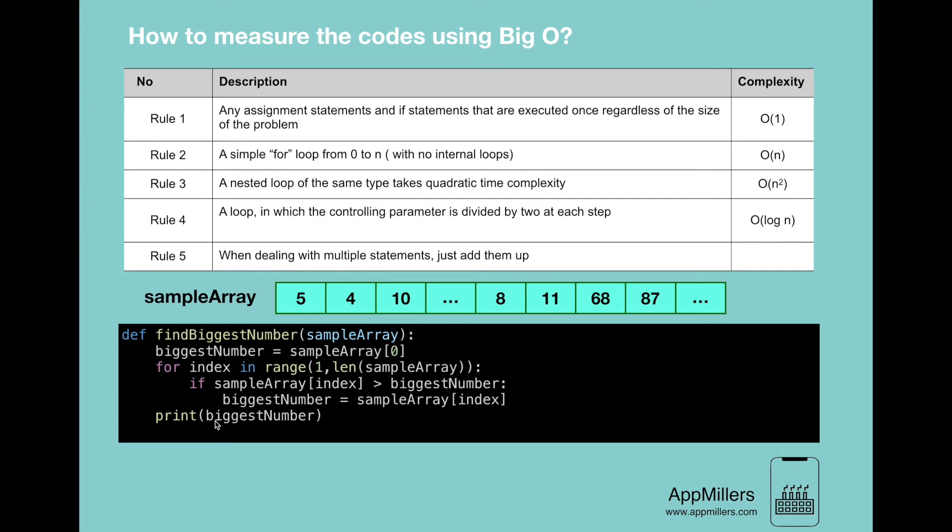So we need to analyze each part of this code separately based on the rules that we provided here. And then we will add all of them. Okay, let's analyze this code.